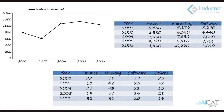The directions are: the line graph gives the number of students passing out in the years 2002 to 2006. The first table gives the percentage of students in the MBA class who sought employment in the areas of finance, marketing, and software. The second table gives the average starting salaries of the students per month in these areas.